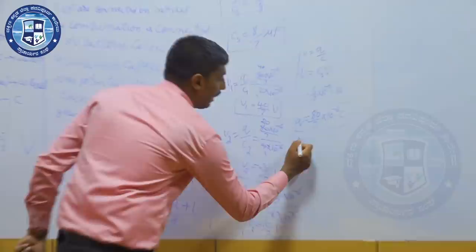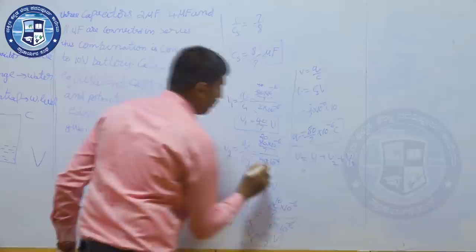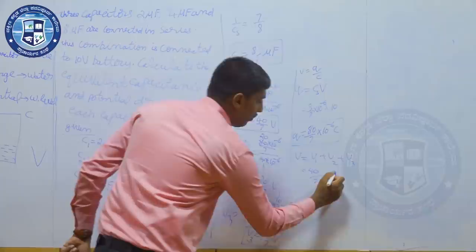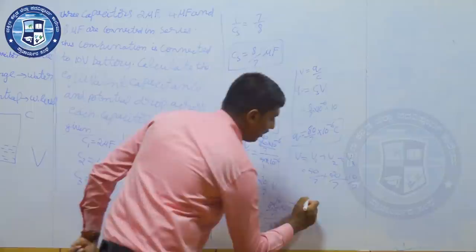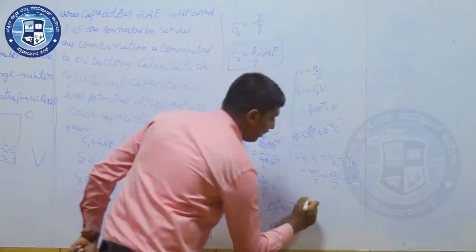We can verify the answer: V1 plus V2 plus V3 equals 40 by 7 plus 20 by 7 plus 10 by 7 equals 70 by 7 equals 10 volts. Yes, the total potential drop is 10 volts, confirming our solution is correct.